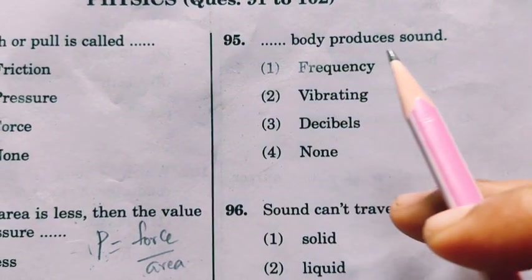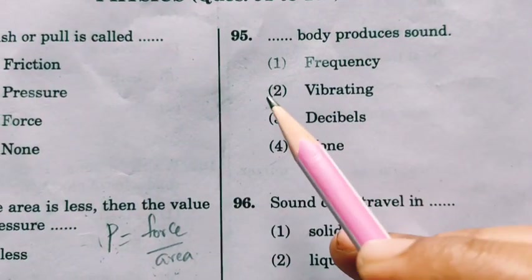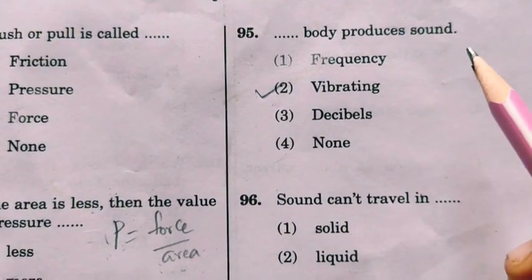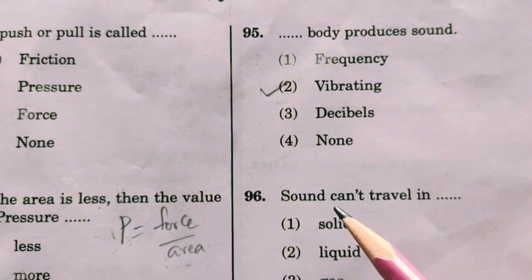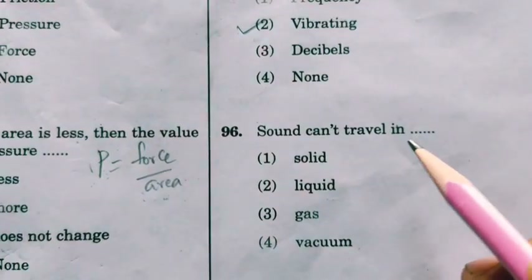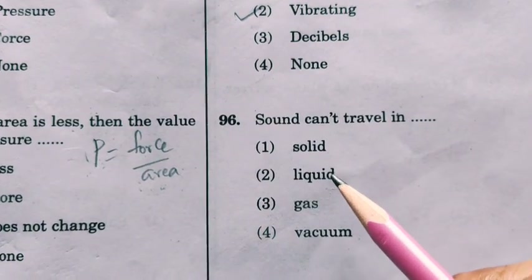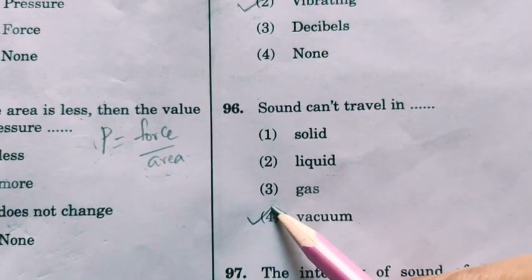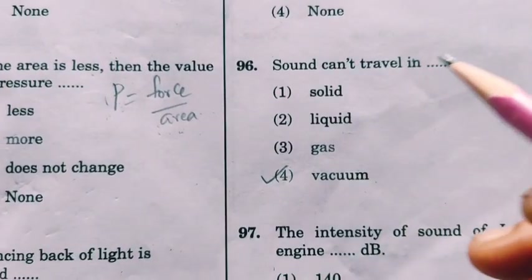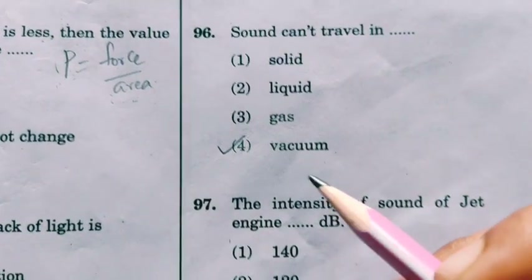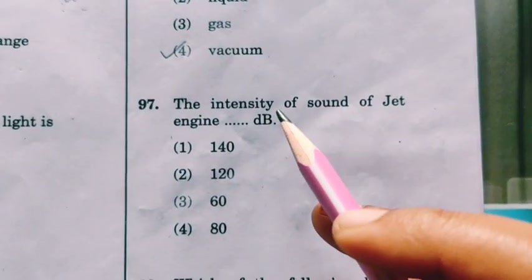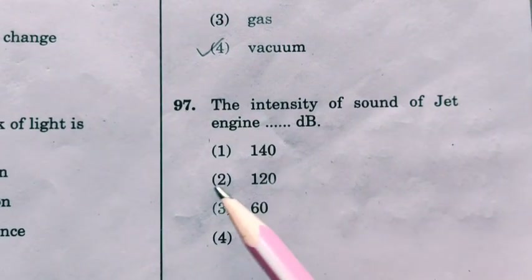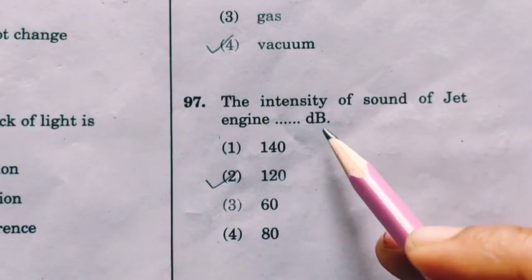A vibrating body produces sound — we know that vibrating bodies produce sound. Sound cannot travel in vacuum; sound needs a medium for transmission. It travels through solids, liquids, and gases. The intensity of sound of a jet engine is 120 decibels.